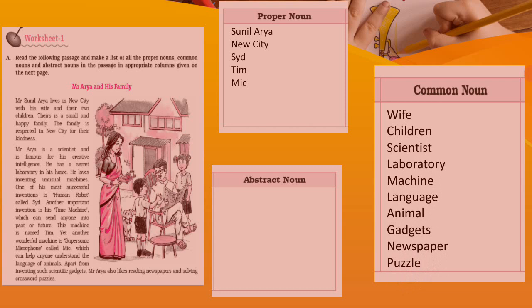You cannot count it, you cannot see it, you cannot touch it. Love — love you can feel, but you cannot count it. So it is thus an abstract noun.